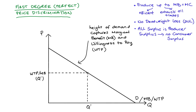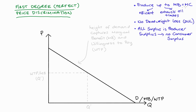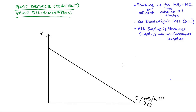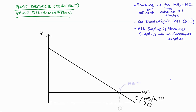Since demand tracks marginal benefit, all we need to do to find firm output when we perfectly price discriminate is to put a marginal cost curve in. I'm going to make my marginal cost constant — just a straight line to make it easy. So where marginal cost intersects demand, that indicates how much our firm will produce, that's Q* units. At this point, marginal benefit equals marginal cost — this is the efficient level of production, so there will be no deadweight loss. This level of output will be common across all ways of perfectly price discriminating.